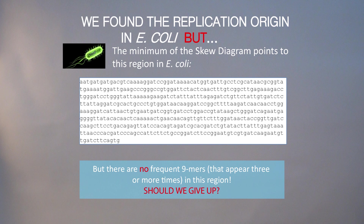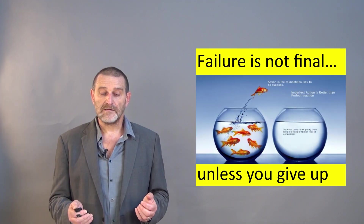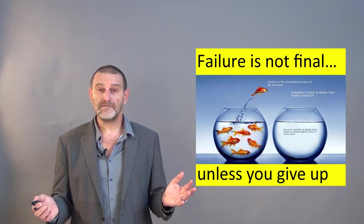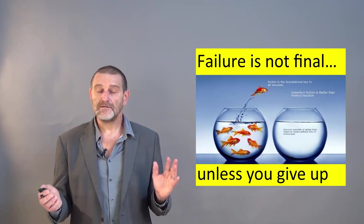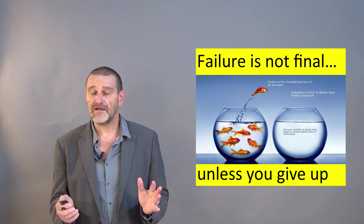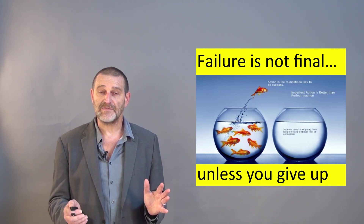There are many reasons why we may fail. Maybe the origin of replication as derived from the skew diagram doesn't point precisely to the area where we want to look. Or maybe we just don't have a good grip on how hidden messages in the E. coli origin look like. Should we give up? Let's try to proceed further and figure out what else can be done.